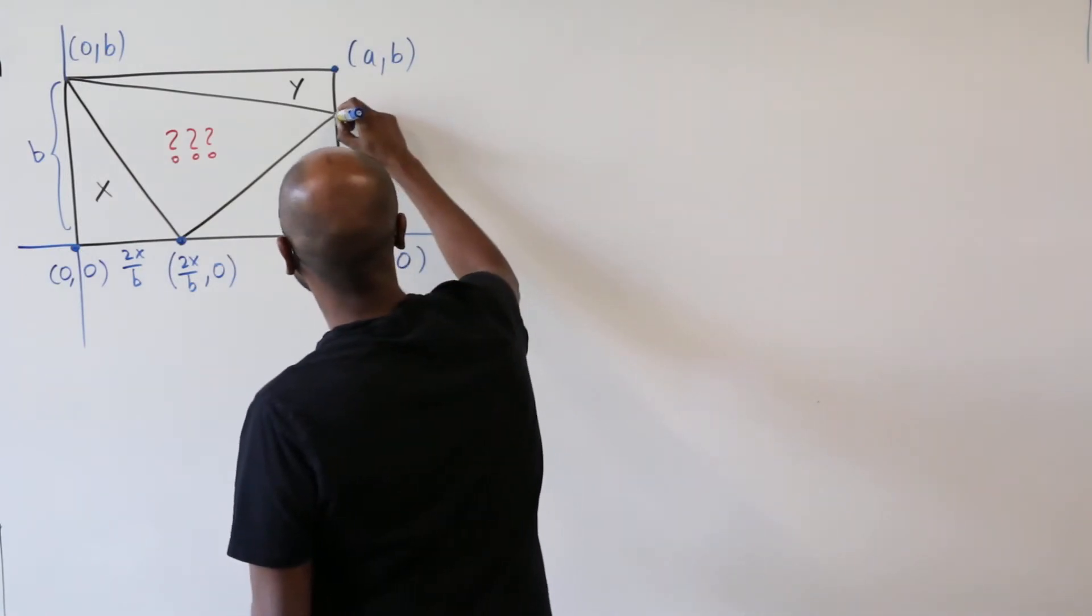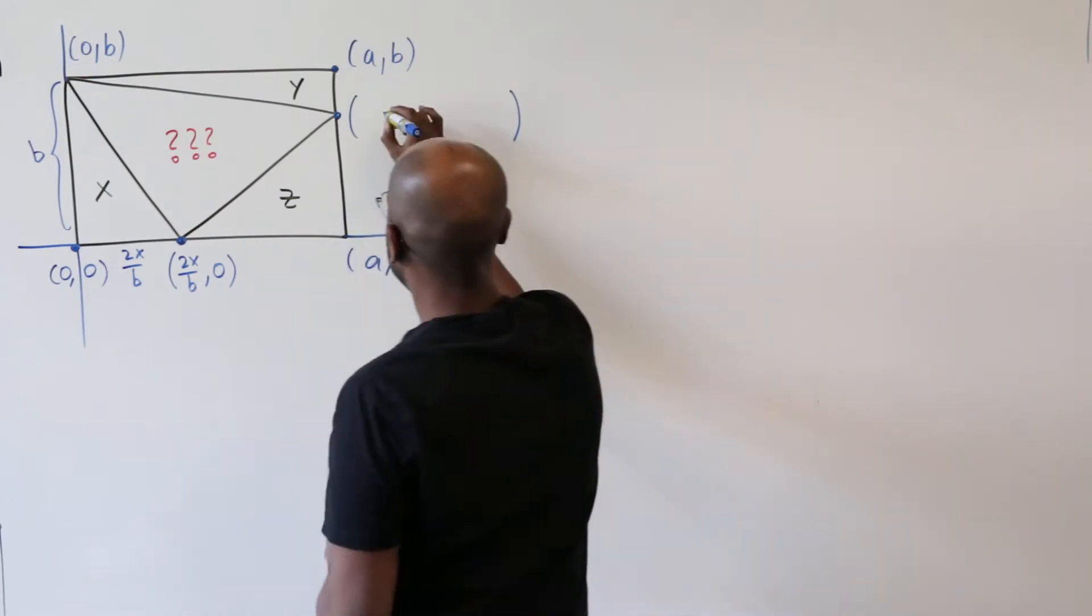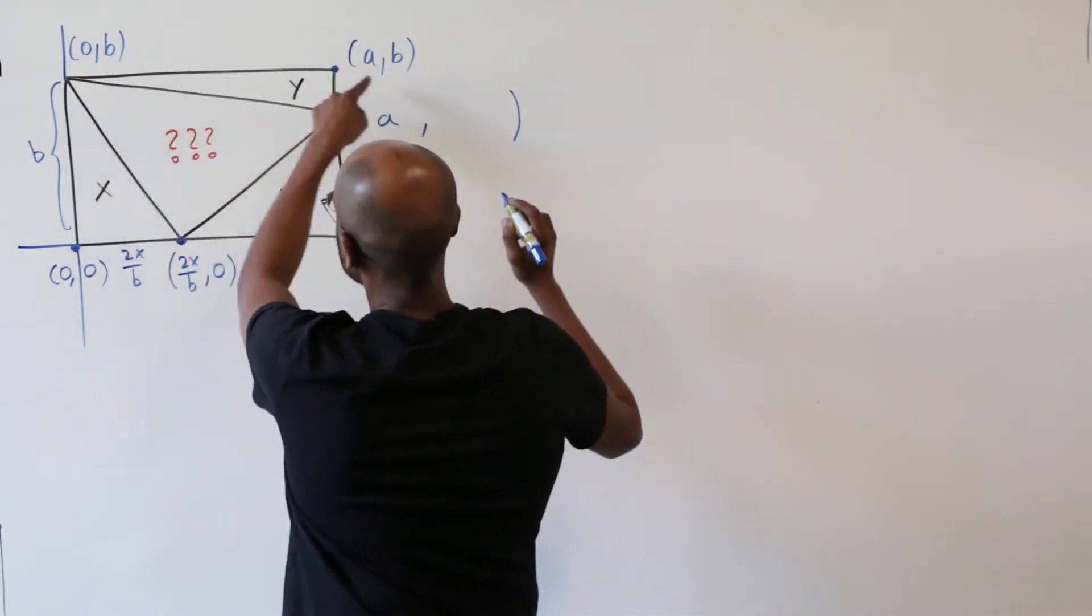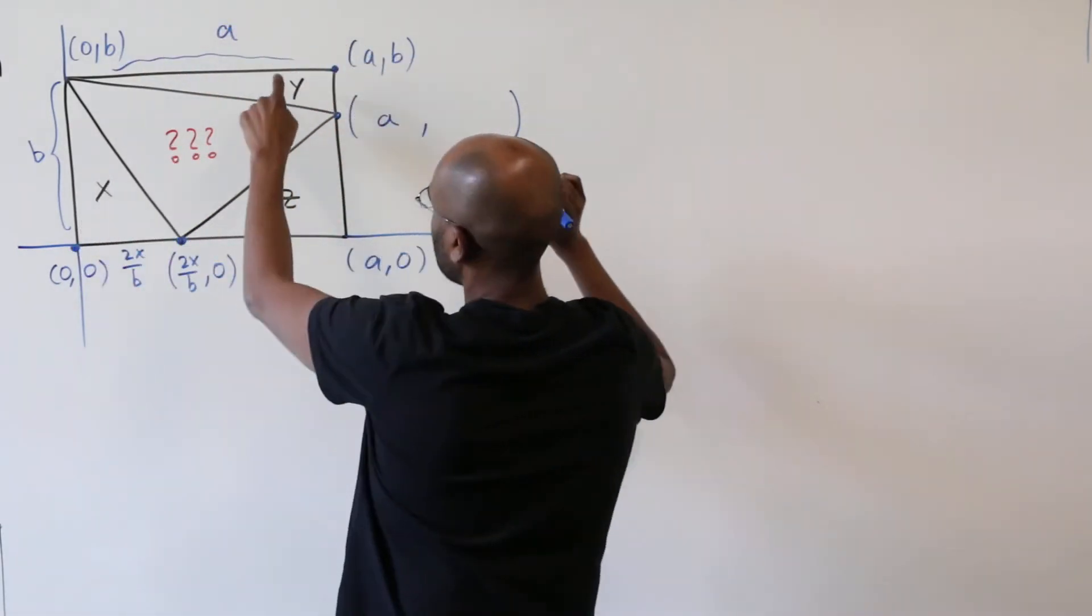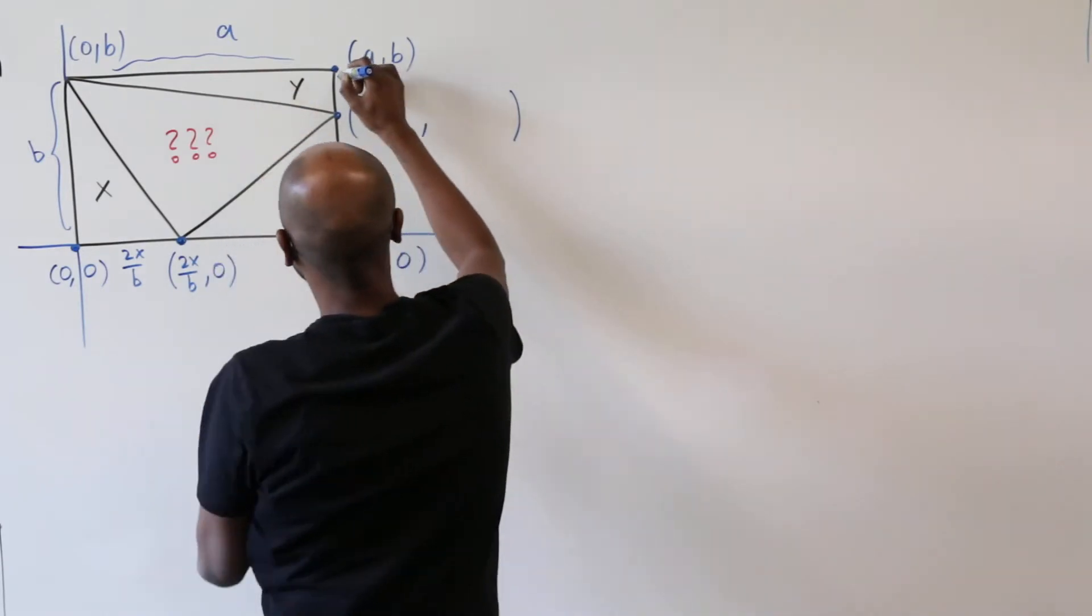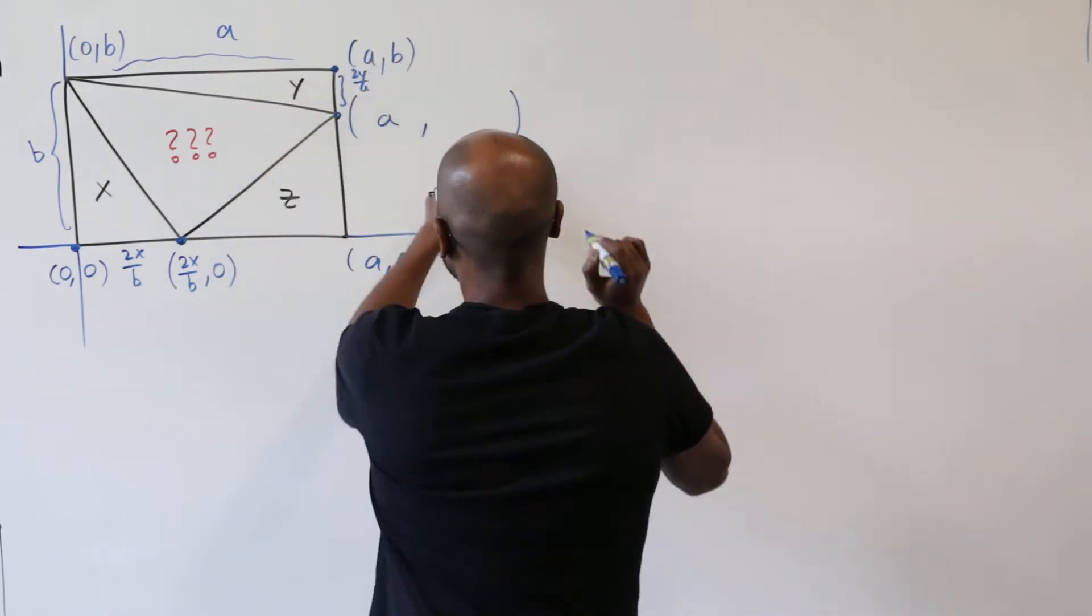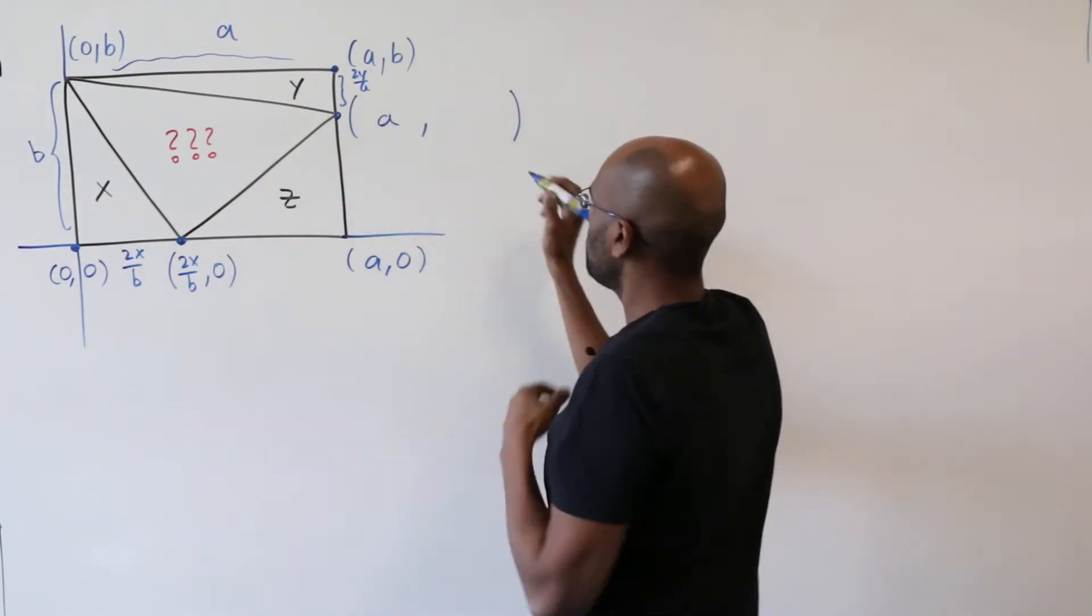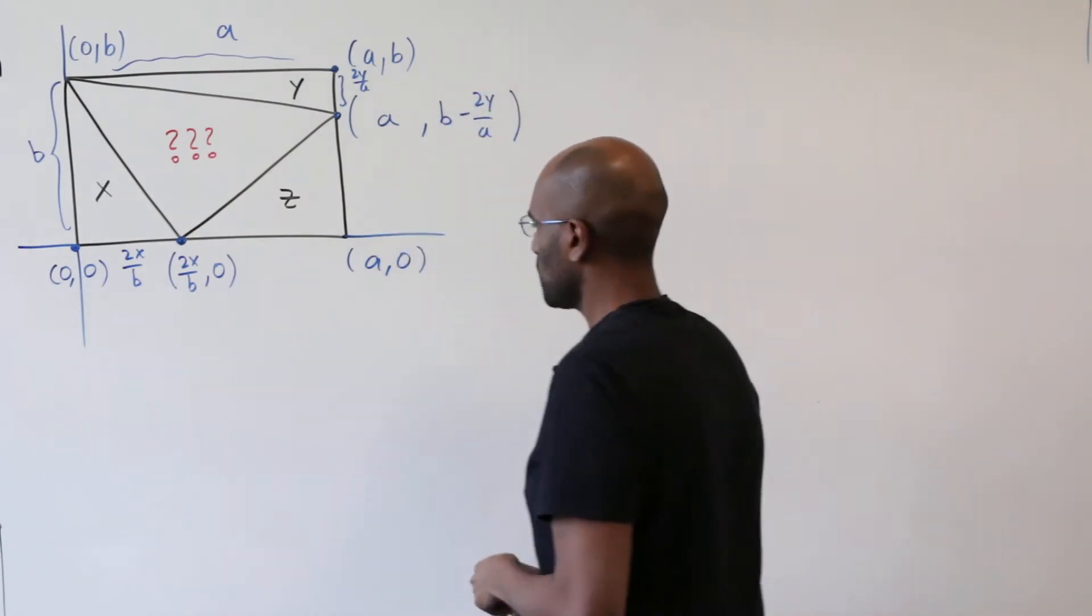We can do a similar thing to figure out this coordinate right here. We know that its left coordinate is a. Now the length of this entire side here is a. The area of this right triangle is y, so 2y, so this length here has to be 2y over a. Meaning this coordinate is 2y over a fewer than b, which is b minus 2y over a. Great, so now we have the coordinates of the three vertices in question.